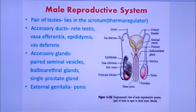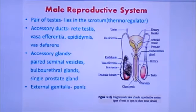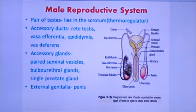The urethra, as you have read in the kidney structure — kidney, ureter, urinary bladder, urethra — is the terminal portion of the reproductive system, through which both urine and semen are conveyed out. The urethra originates from the urinary bladder, extends through the penis, and has an external opening called the urethral meatus.